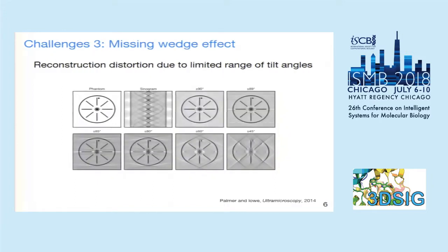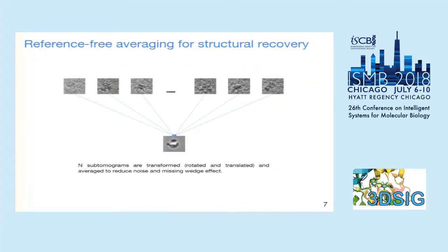The third challenge is the missing wedge effect. Since the sample cannot be rotated a full 180 degrees, the reconstructed tomogram will have distortions due to the missing wedge effect. This picture shows the missing wedge effect at different tilt angles — the more complete the tilt angle range, the lesser the distortion. Usually the tilt angle range is from minus 60 to plus 60 degrees, and compared to the true structure there is already strong distortion on the horizontal features.